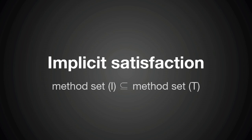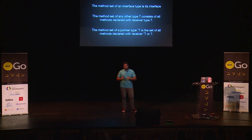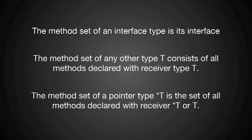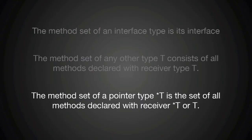All of you know that Go has implicit satisfaction. Now that we're talking about sets, implicit satisfaction can be represented as: for type T to satisfy interface I, the method set of I should be a subset of the method set of T. So T could have more methods, but it should have at least all the methods that I has. To understand this, we have to understand what method sets are. Method sets are defined by the Go specification in a very clear and concise way, but that can be a little bit confusing for newcomers.